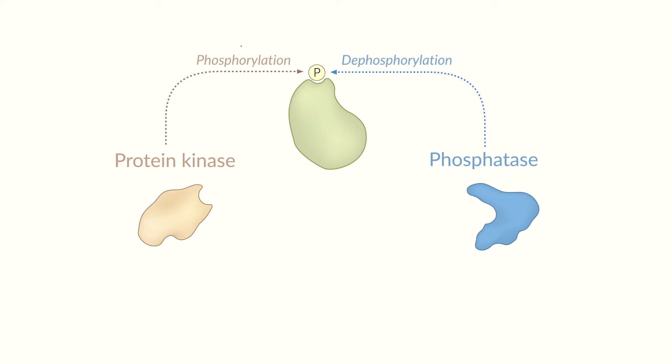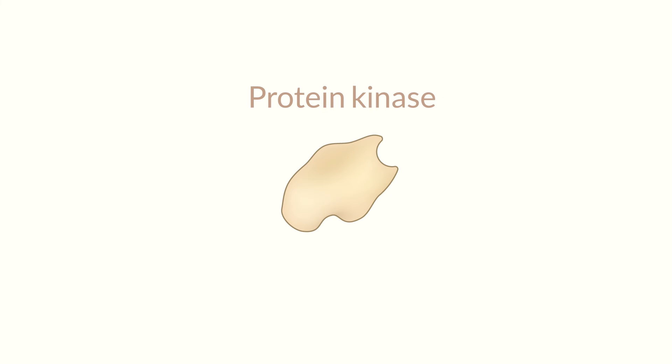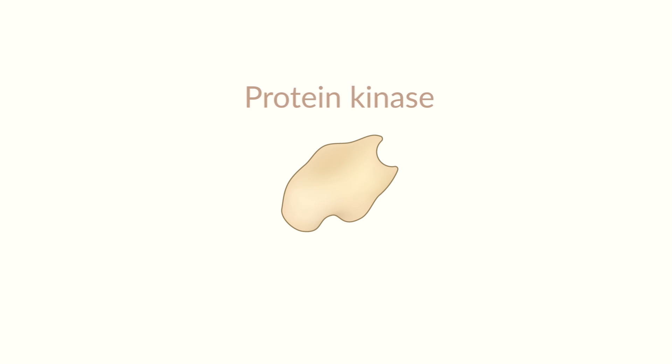As you can see, signal transduction through the addition of phosphate groups is a powerful mechanism. Accordingly, the enzymes are called kinases, with the prefix kin as in kinetics, meaning to move.